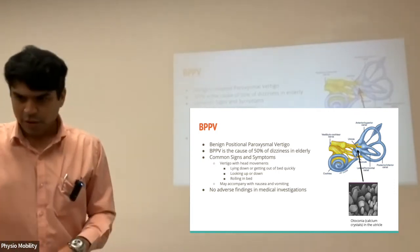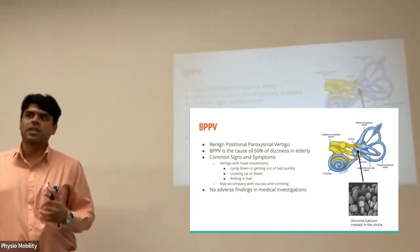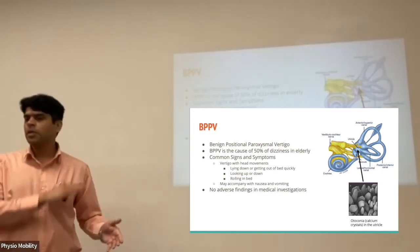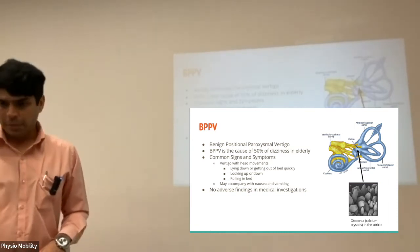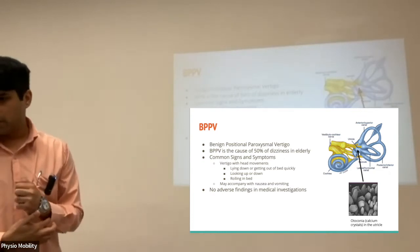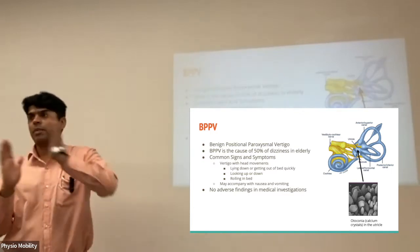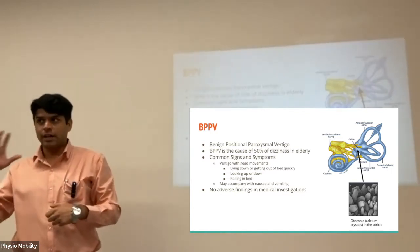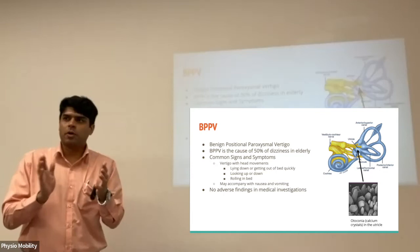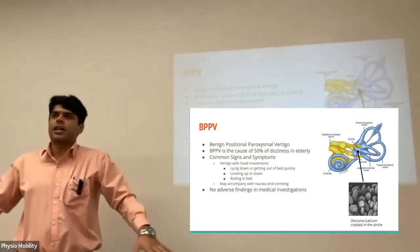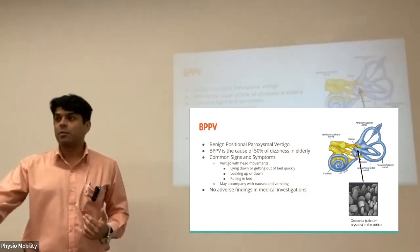Benign paroxysmal positional vertigo is about 50% of the causes of dizziness. The most typical movements that cause the symptoms to come on are lying down or getting out of bed. Sometimes people say 'when I try to lie down, the first few seconds I feel like the room is spinning around me.' Or when you first get out of bed in the morning, you have to sit at the edge of the bed for a minute or two, allow the system time to settle down, and then you can start your day.